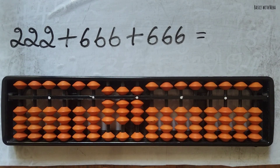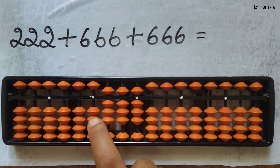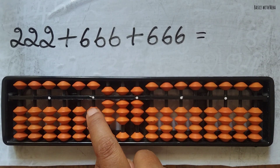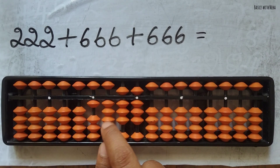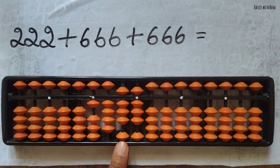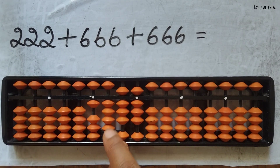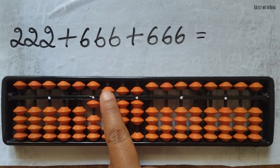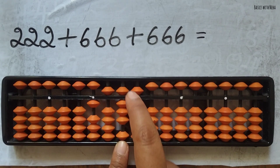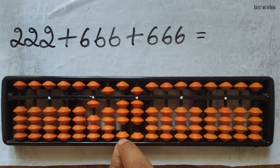Now we need to add 666 again. To add 6, we can use the combination formula which is plus 10 minus 5 plus 1. Again the combination formula, but to add plus 10, we have to use the small friends formula which is plus 5 minus 4. Thereby, I am adding 10 minus 5 plus 1. Complete the formula.